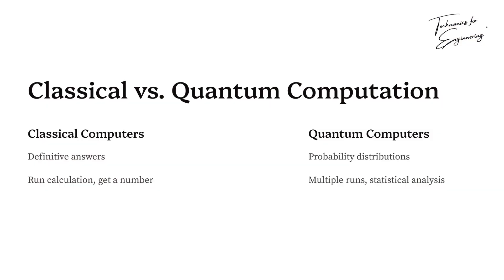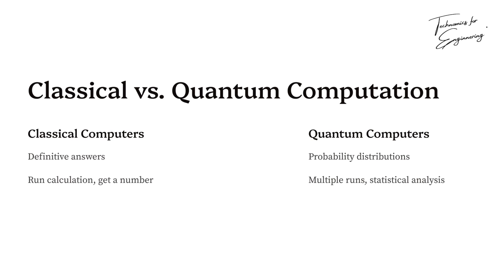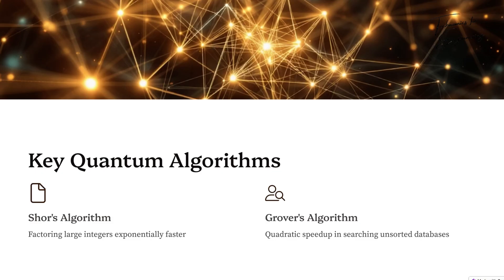Classical computers yield a definitive answer — run a calculation, get a number. Quantum computers, however, often provide a probability distribution of outcomes. Running the calculation multiple times and analysing the results statistically finds the most likely correct answer. It's a radically different approach.